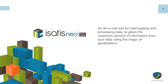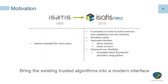Isatis.neo is an all-in-one tool designed to glean the maximum amount of information from your data using geostatistics. It was a complete rewrite incorporating the original algorithms. It's Windows-native so you don't need any emulator, and it has an improved, more intuitive interface that's easier to learn. The older Isatis looked like something out of the mid-90s. We also have enhanced user flexibility and the ability to script routines.